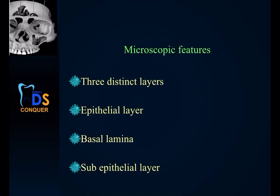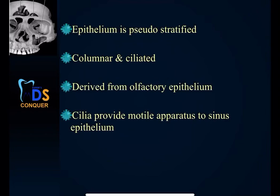The microscopic features have 3 distinct layers: the epithelial layer, the basal lamina, and the sub-epithelial layer. The epithelium is pseudo-stratified columnar or ciliated, derived from the olfactory epithelium. The cilia provide the motile apparatus to the sinus epithelium.